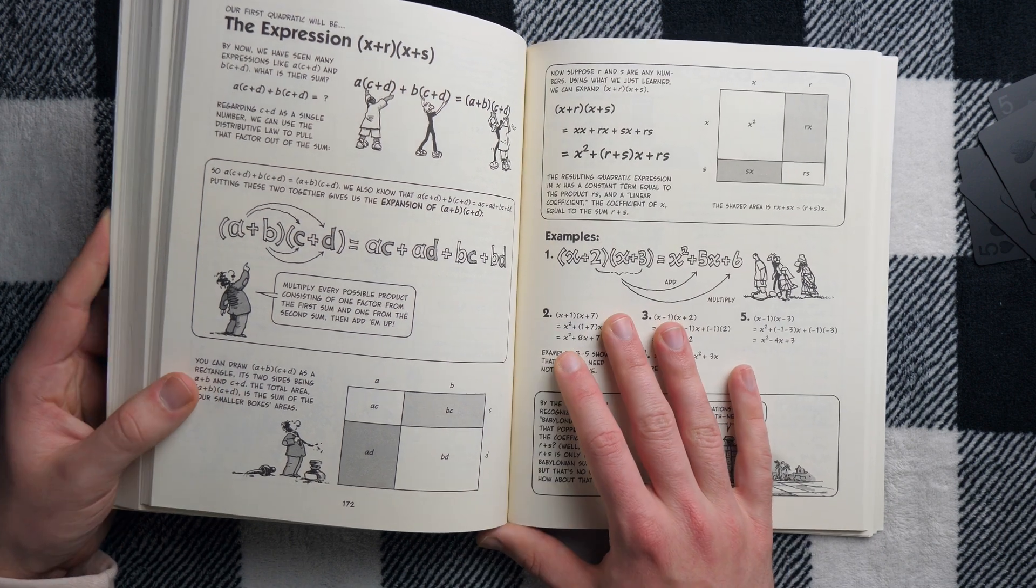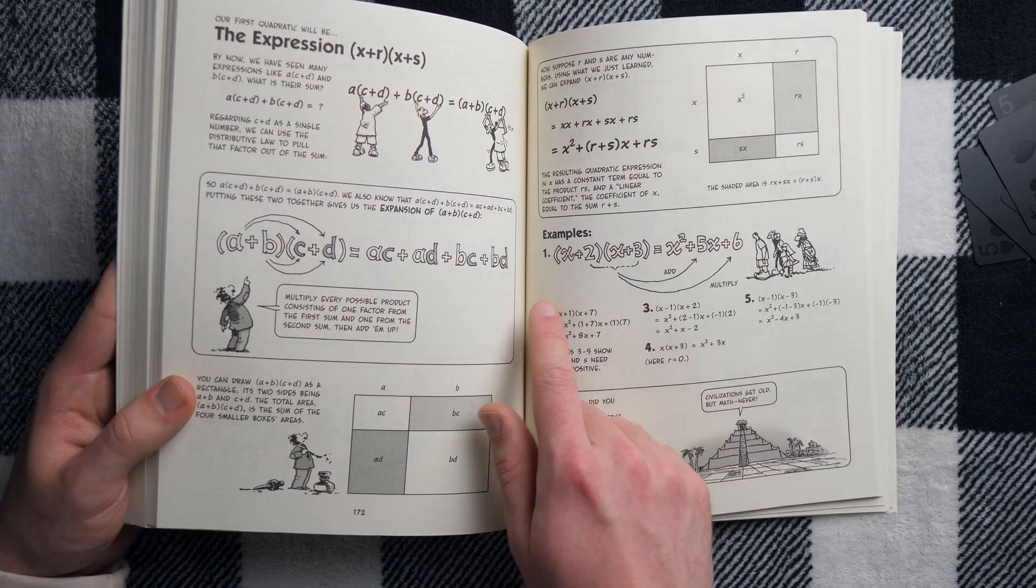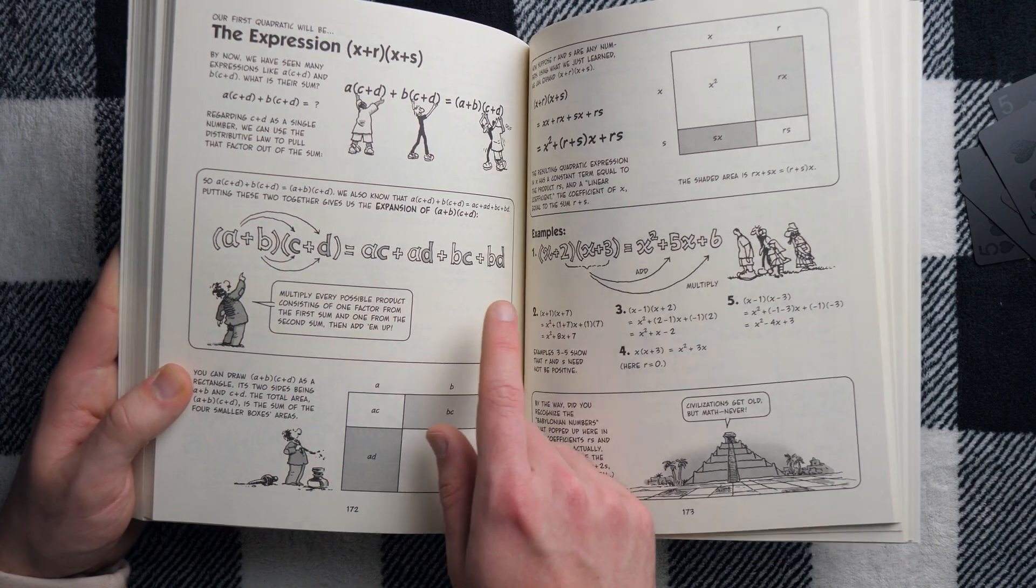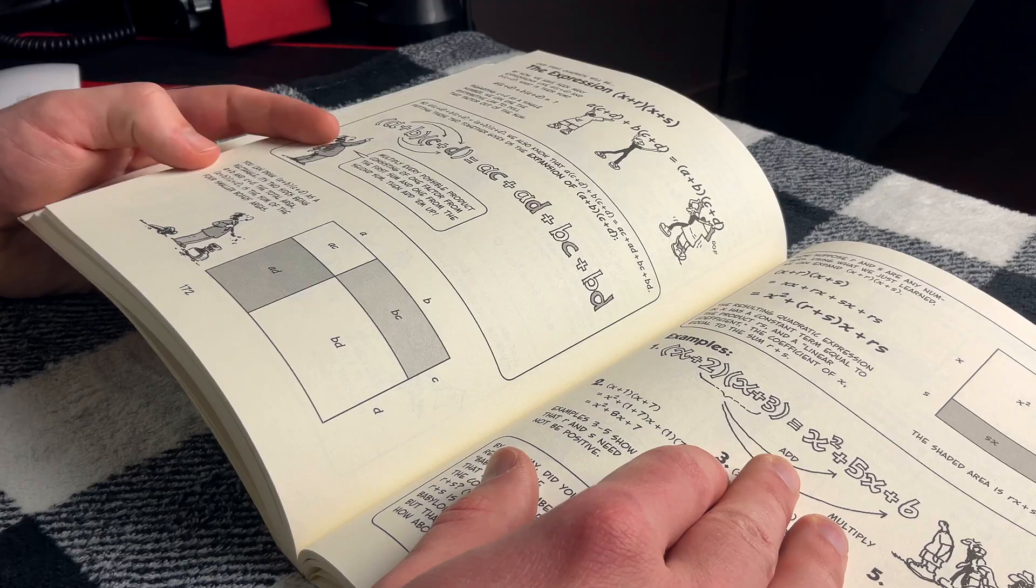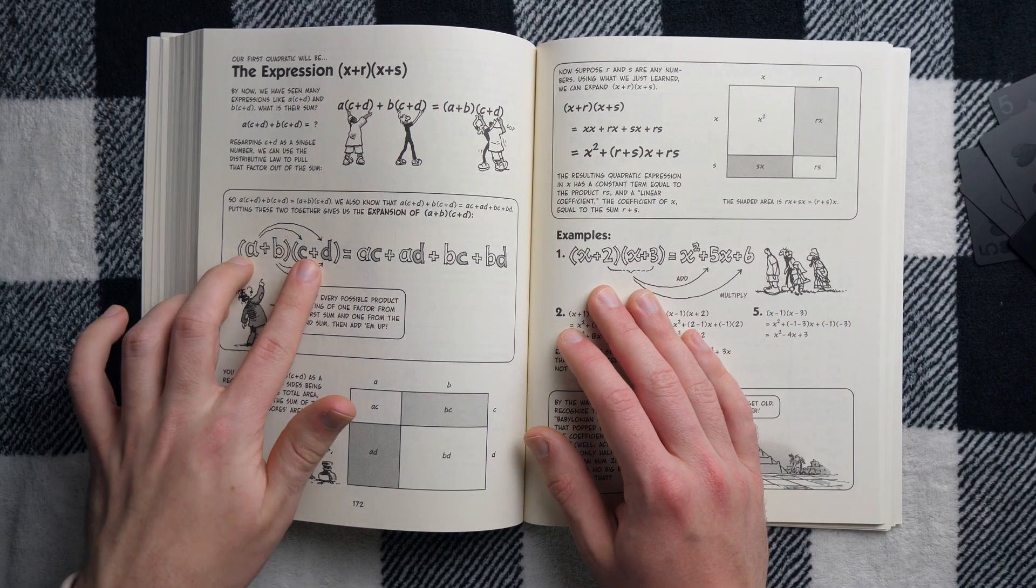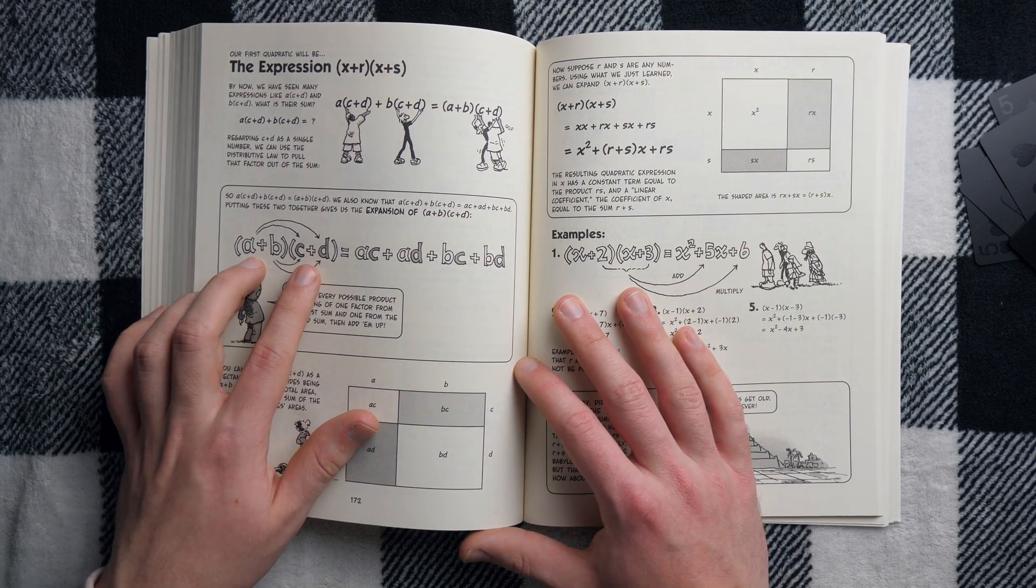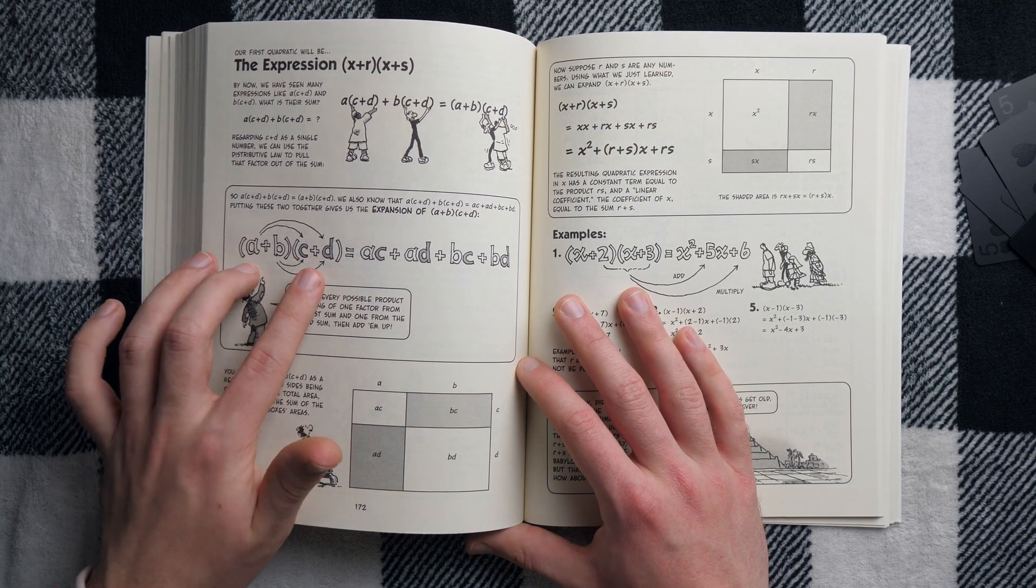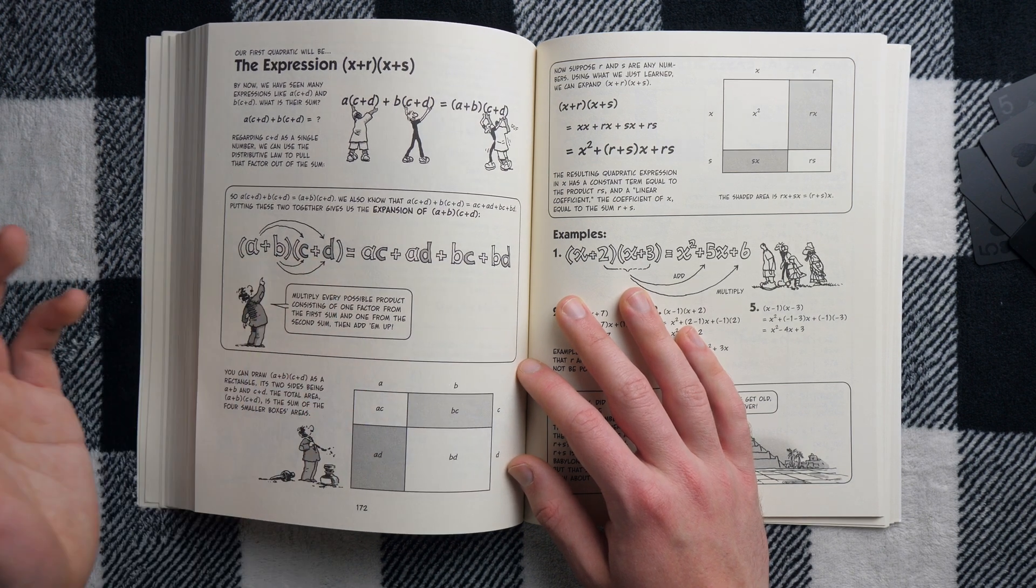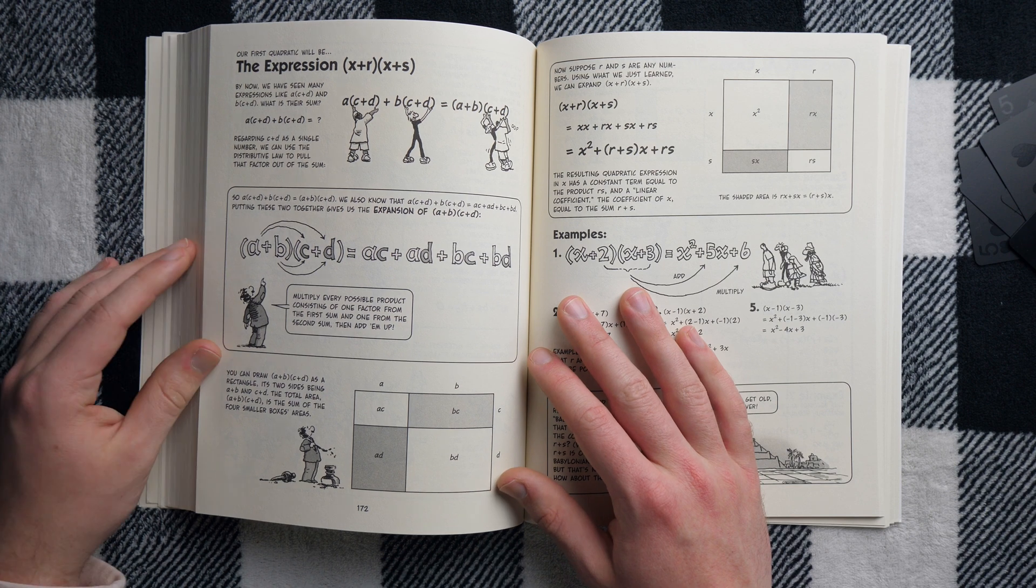One of the interesting things I really like about this book is that, so far as I can tell, they do not talk about the FOIL method for distributing, right? They don't talk about FOIL. They just say multiply every possible product consisting of one factor from the first sum and one from the second sum and then add them up. You know, FOIL has its value. A lot of people memorize it and they can figure this out. But FOIL is so specific when what's really happening is a pretty straightforward process that, if you understand this, can be easily generalized to any other similar situation. If you just understand that what needs to be done is all the possible multiplication of the pairs, then it doesn't matter if you've got a trinomial and a binomial, a trinomial and another trinomial, you understand how to take care of it.